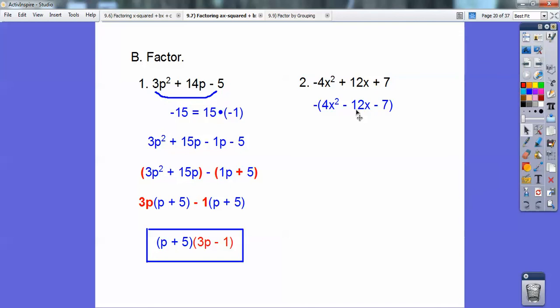Factors of negative 28 to add to this guy are negative 14 times 2. All right, so I'm going to replace that negative 12 with -14x + 2x. There's my negative 12x right there. Don't lose that negative. A lot of kids want to lose that negative. That stays right out there.